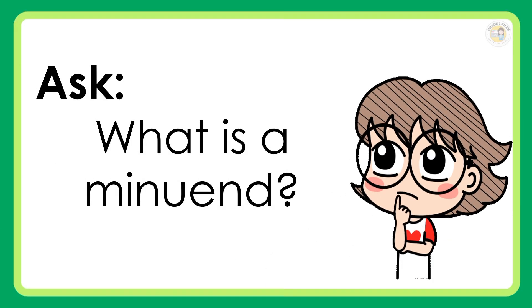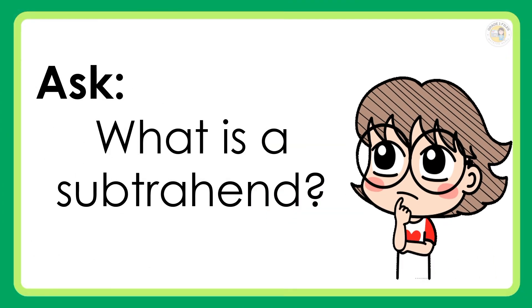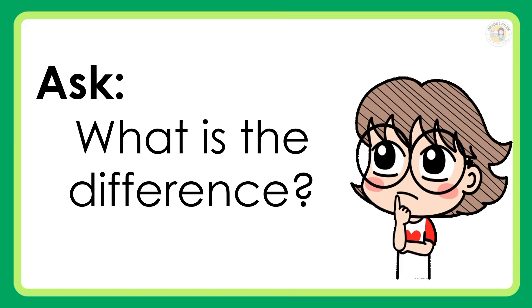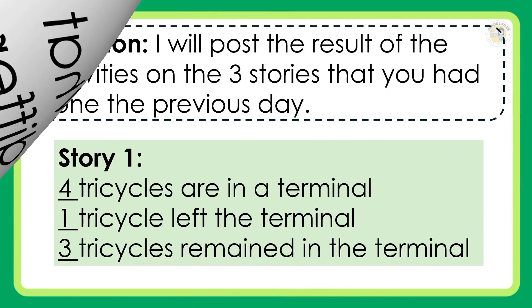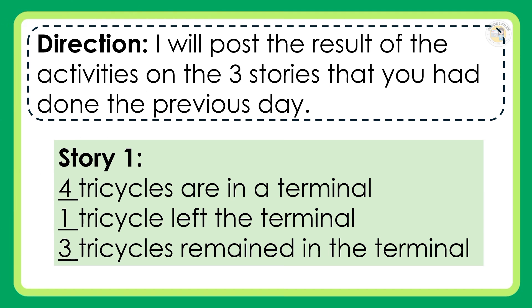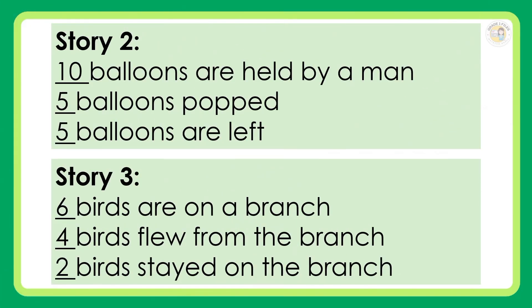What is a minuend? What is a subtrahend? What is the difference? Recap: Story 1 — 4 tricycles are in a terminal, 1 tricycle left the terminal, 3 tricycles remained. Story 2 — 10 balloons are held by a man, 5 balloons pop, 5 balloons are left. Story 3 — 6 birds are on a branch, 4 birds flew from the branch, 2 birds stayed on the branch.